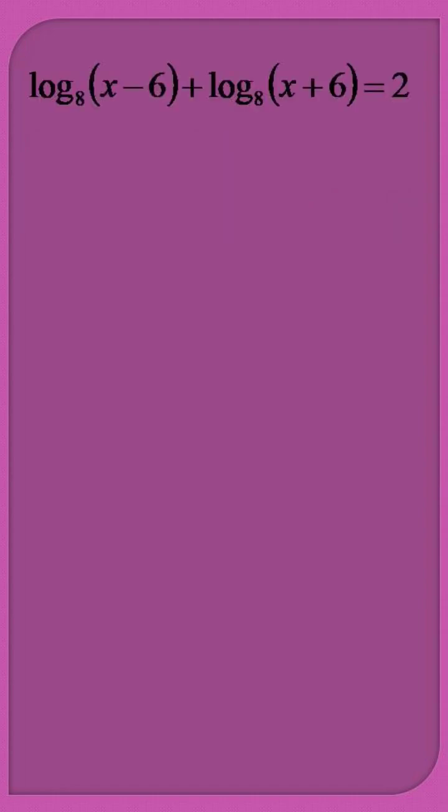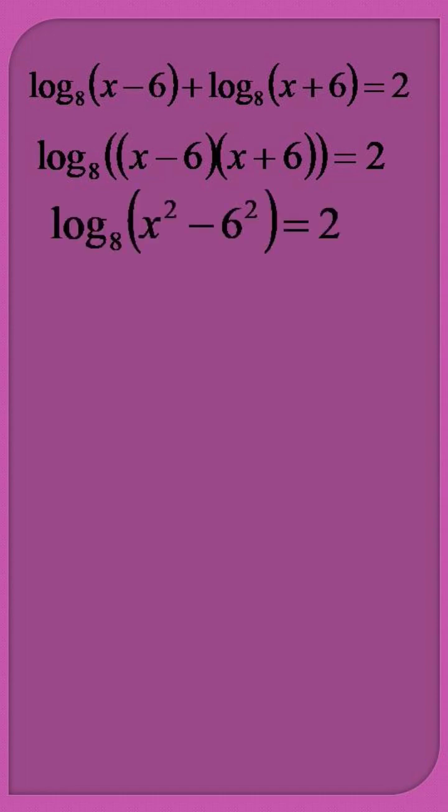To solve this equation we first invoke the multiplication formula of the log. So it becomes log₈((x - 6)(x + 6)) = 2, which further is simplified as log₈(x² - 6²) = 2.